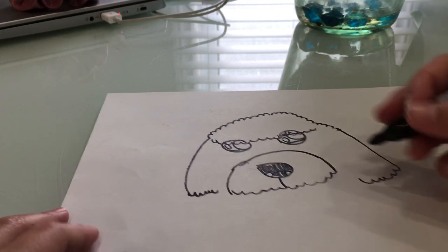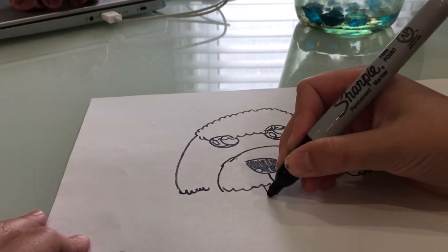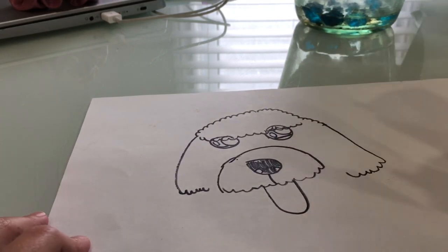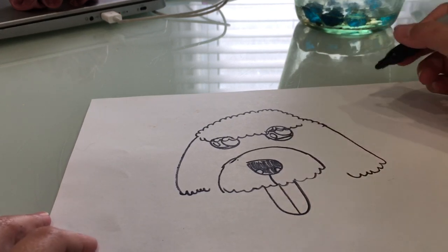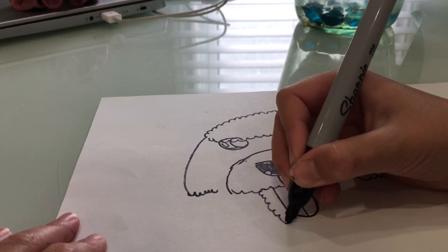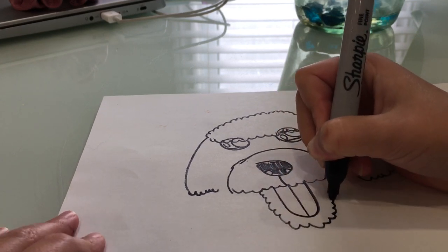Now, you need to draw a super funny part that I want to do, which is the tongue. So, you make like a little popsicle and a little popsicle. Make a line in it. And then, you make the same little cloudy pattern along your tongue.